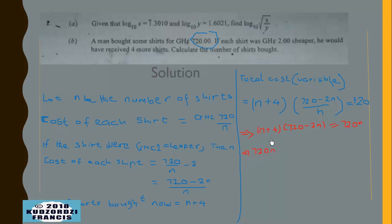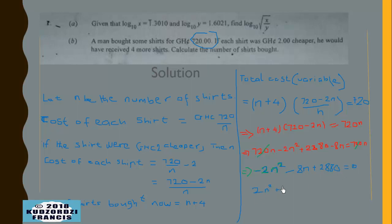Expanding gives 720n minus 2n squared plus 2880 minus 8n equals 720n. The 720n terms cancel, leaving negative 2n squared minus 8n plus 2880 equals 0. We multiply through by negative 1 to obtain a standard form quadratic.